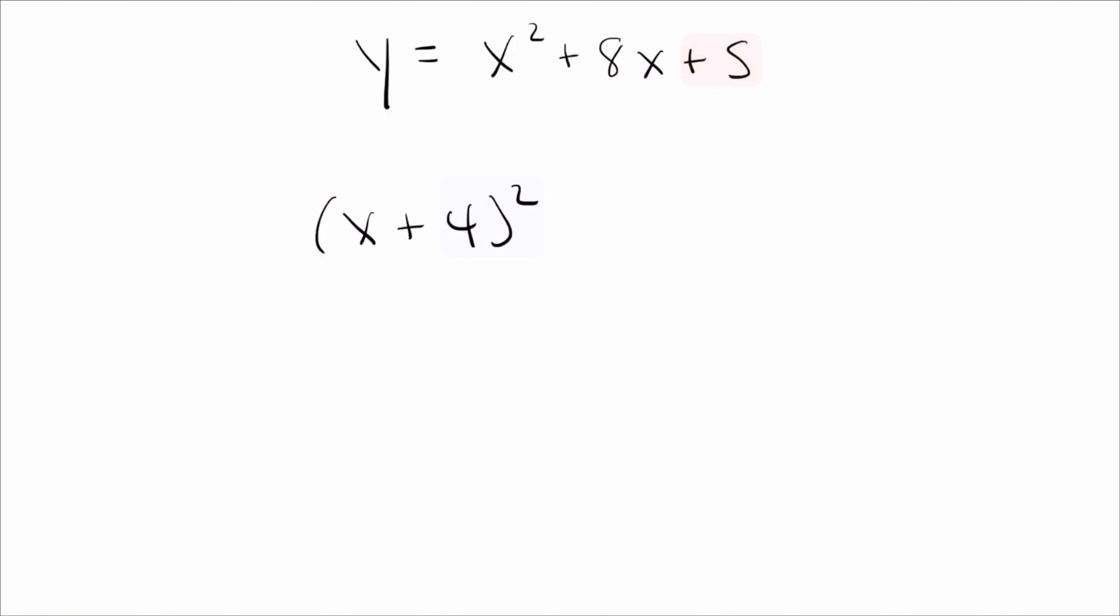So the only thing that might not match is the number at the end. So I'm going to have 4 squared at the end, which is 16. I don't want 16, though. I want 5. How do I turn 16 into 5? I subtract 11. And there we go. We've completed the square.